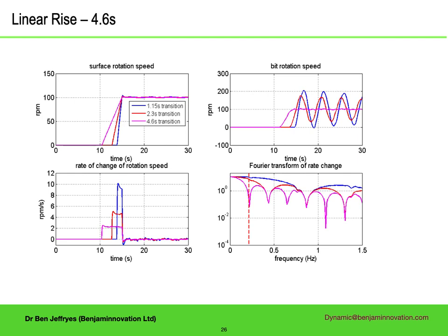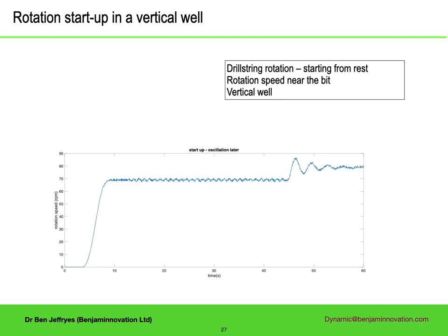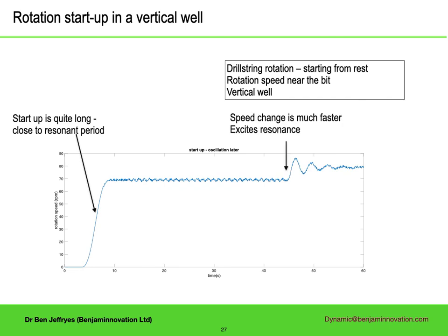The graphs here show what happens if we get the notch in the spectrum to line up with the fundamental frequency. For a linear ramp, that means the transition has to take the same time as the period of the resonance you want to avoid, or an integer multiple of it. I've plotted a 1.15 second startup, as well as 2.3 seconds and 4.6 seconds, which is the period of the fundamental mode. If you get the transition time right — the cyan line — the startup oscillations virtually vanish. What is important to note is that it doesn't matter what the initial and final rotation speeds are; all that matters is the time it takes to make the transition.